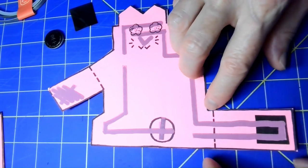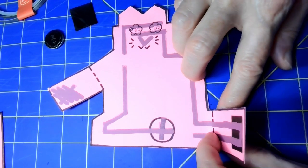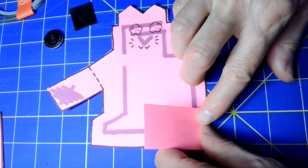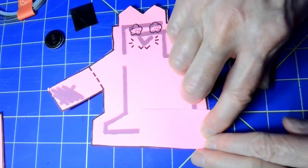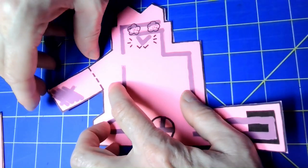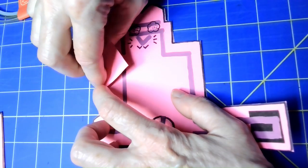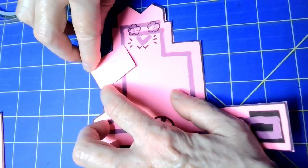First thing you're going to do with your template all cut out is fold it up along those dotted lines. Fold up the tail, make a nice crease, and fold up the arm and the paw.